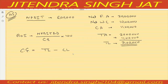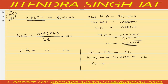We can calculate current liability using the working capital formula: current assets minus current liabilities. Working capital is 10 lakh and current assets are 11 lakh, so current liabilities equal 1 lakh. Therefore, capital employed equals 31 lakh minus 1 lakh, which is 30 lakh.